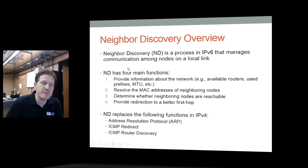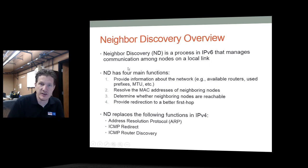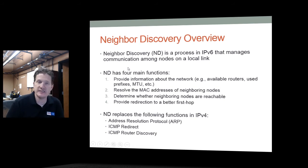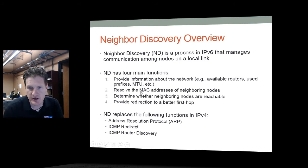These are all limitations of IPv4 that have been improved in IPv6. Neighbor discovery replaces the need for ARP, ICMP redirect, and ICMP router discovery. Those three protocols are no longer required when using IPv6.